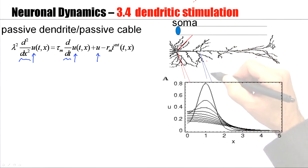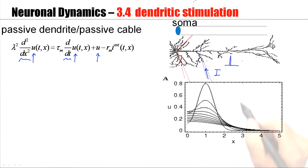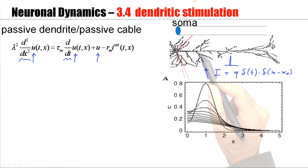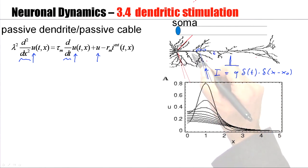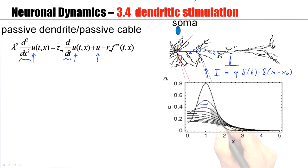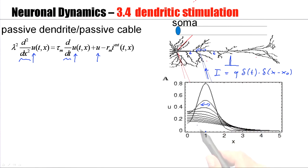We inject a current pulse — a very short current pulse — at time t, at location x minus x_zero. This current pulse will put a lot of charge at this location. The charge will spread out in both directions and will also leave the dendrite through ion channels. As a result, the peak that was at the injection location becomes broader and broader — initially it's sharp, then it becomes broader. Because of these transversal currents, the surface under the peak will also decrease over time.